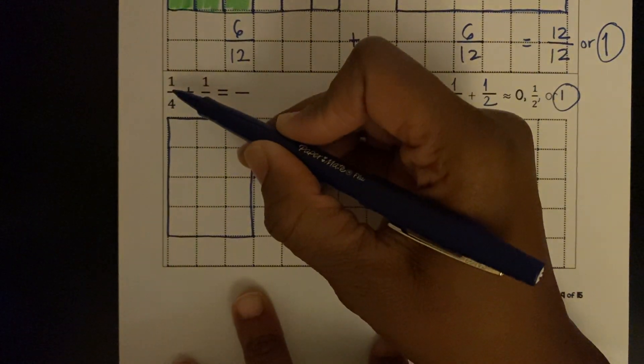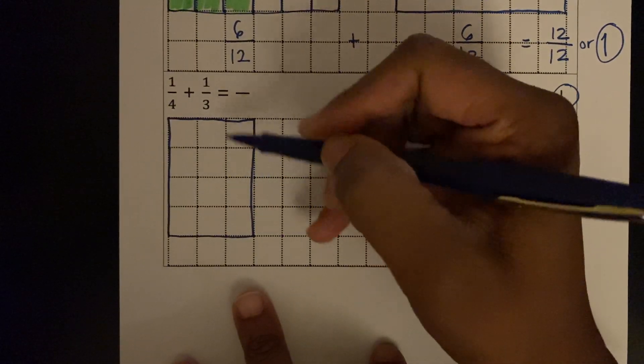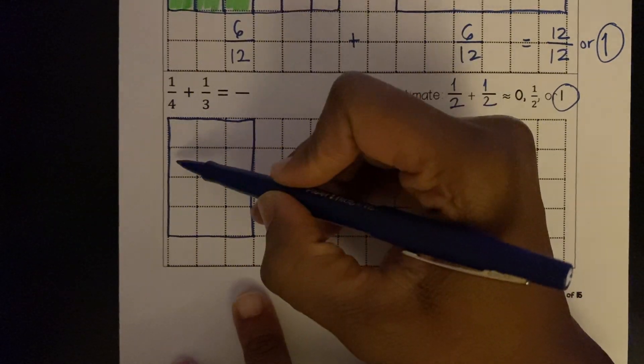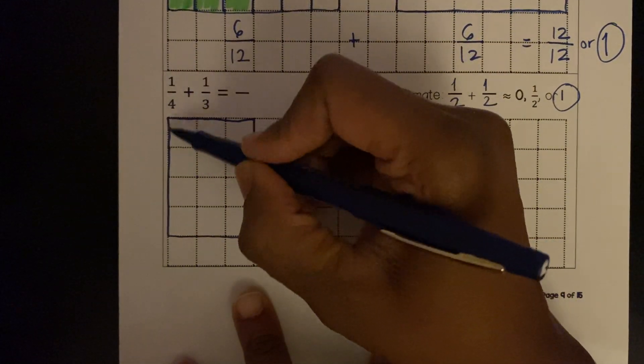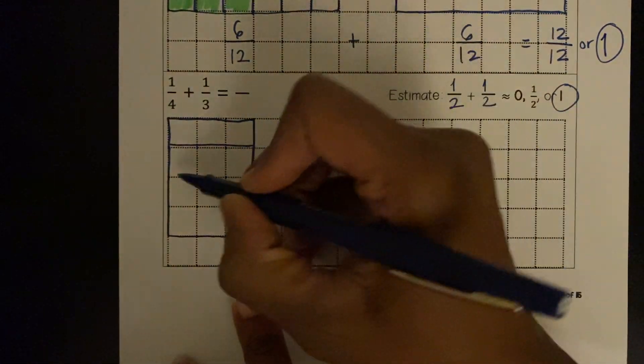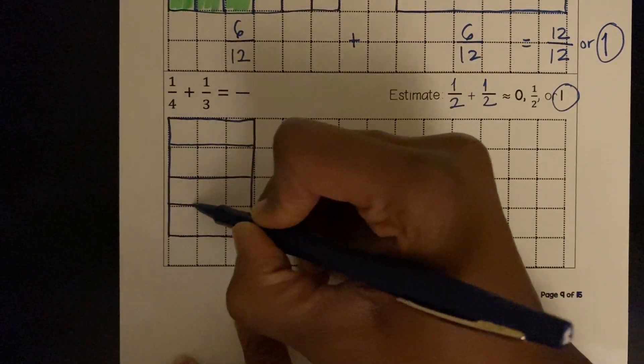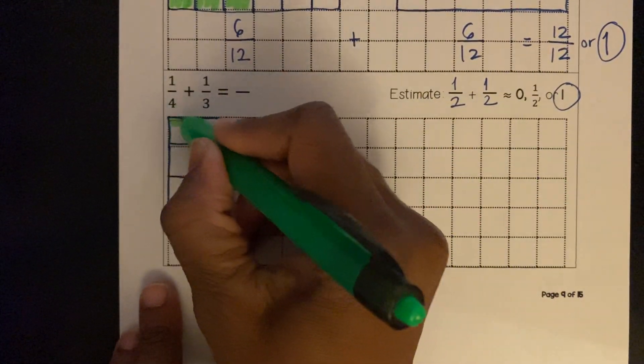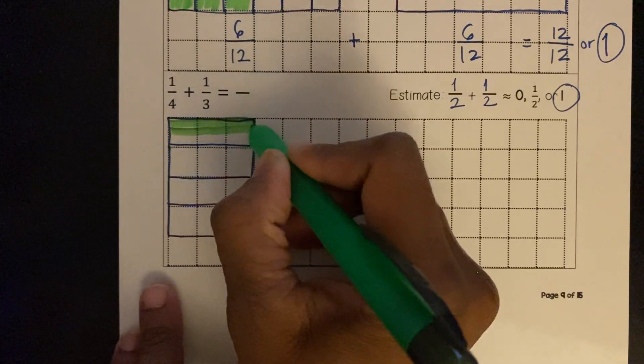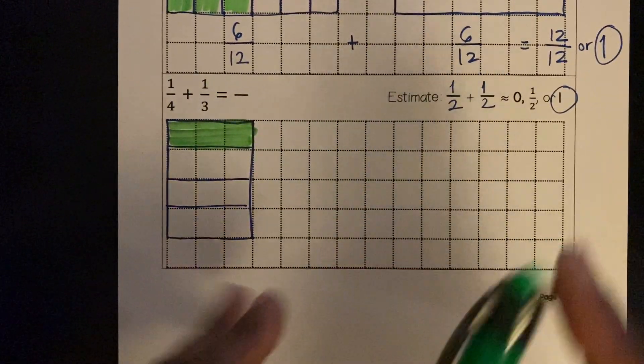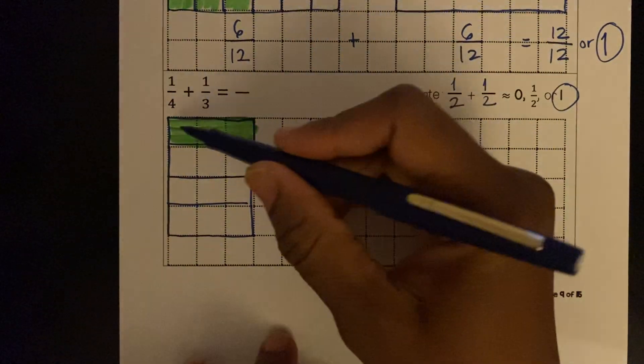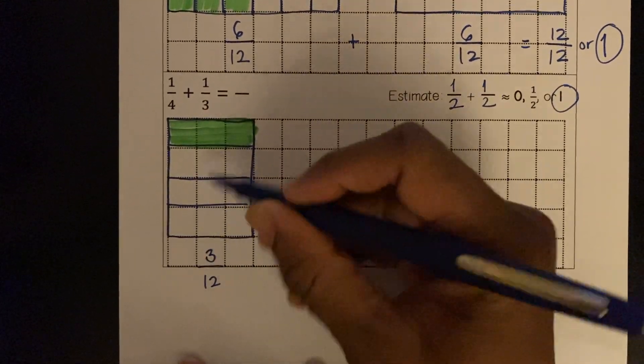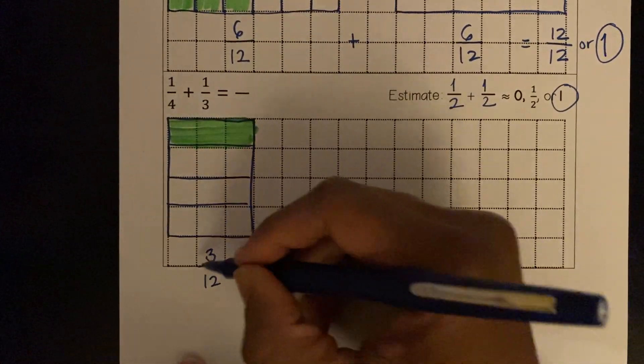I'm modeling the 1/4, so I need to partition this shape into 4 equal pieces. One, two, three - those are thirds. One, two, three, four. There we go. 1/4, 2/4, 3/4, and 4/4. We need to shade in 1 of those fourths. Three, six, nine, twelve. Three. So 1/4 is equivalent to 3/12.